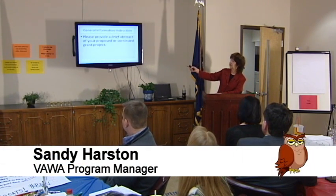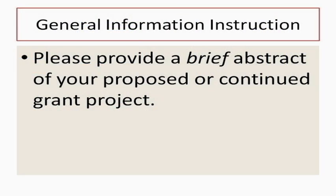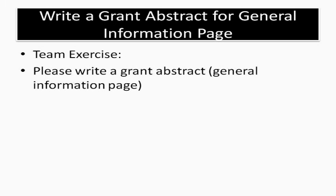This is the instruction for the General Information page. We want a brief abstract of your proposed project. Before, when we talked about the agency overview, we were looking to see what you'd tell us about the agency. Now we're looking to see briefly what you would tell us about the project that you want the funding for. Do you see the difference? It's subtle, but it's there. Less is more.